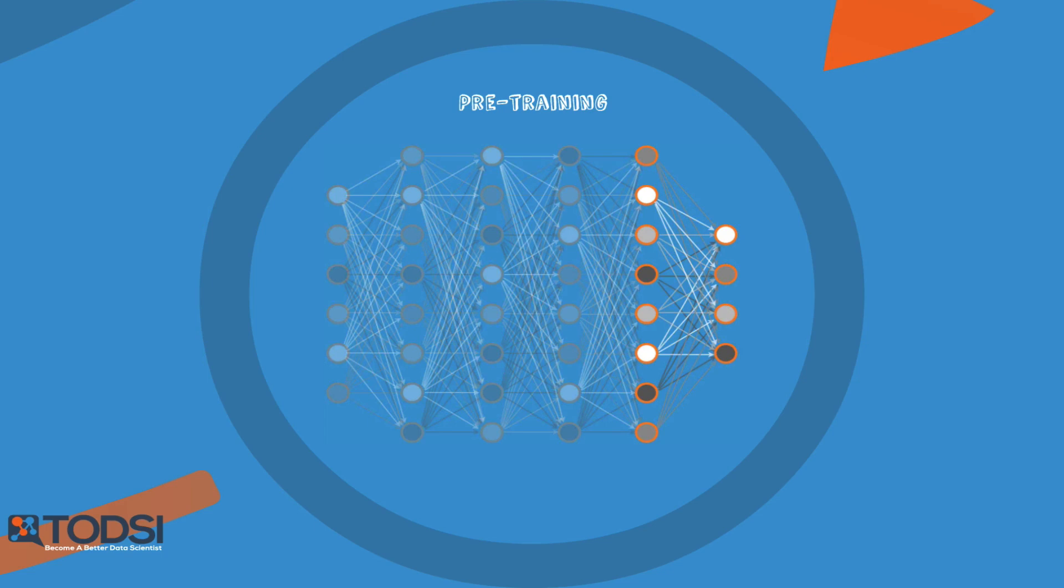An important note about a DBN is that each RBM layer learns the entire input. In other kinds of models, like convolutional nets, early layers detect simple patterns and later layers recombine them. Like in our facial recognition example, the early layers would detect edges in the image, and later layers would use those results to form facial features.